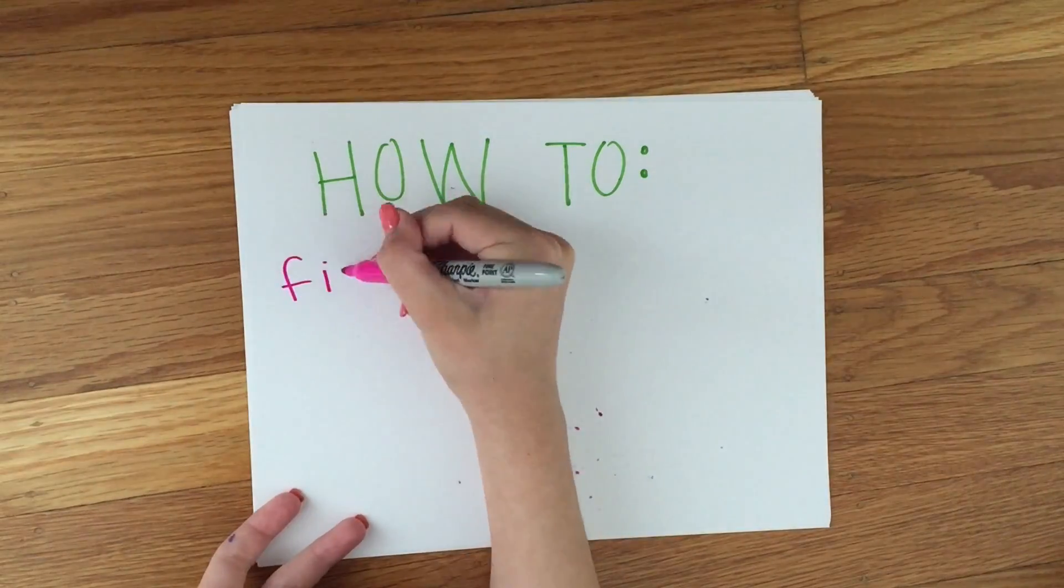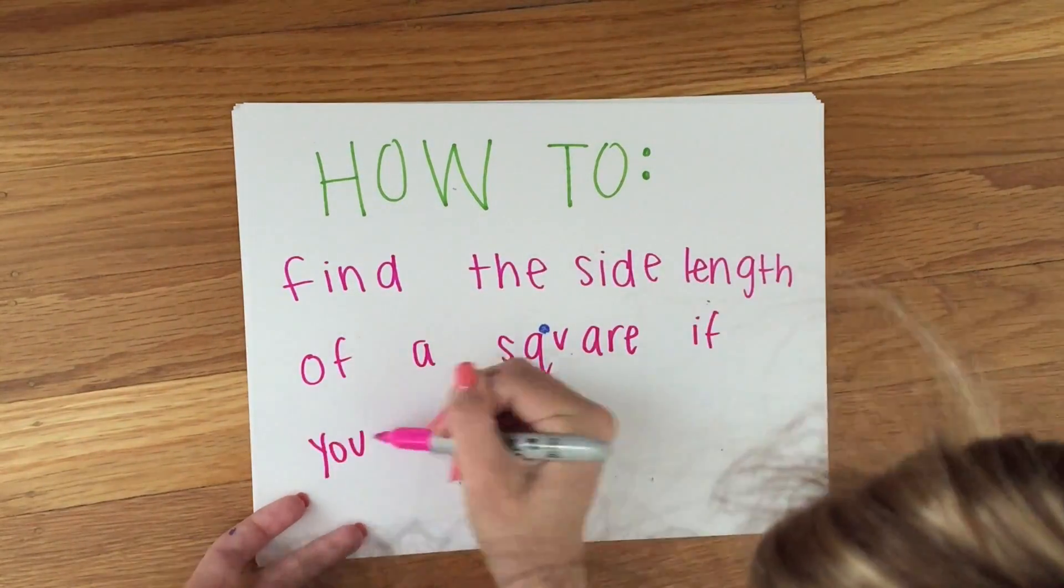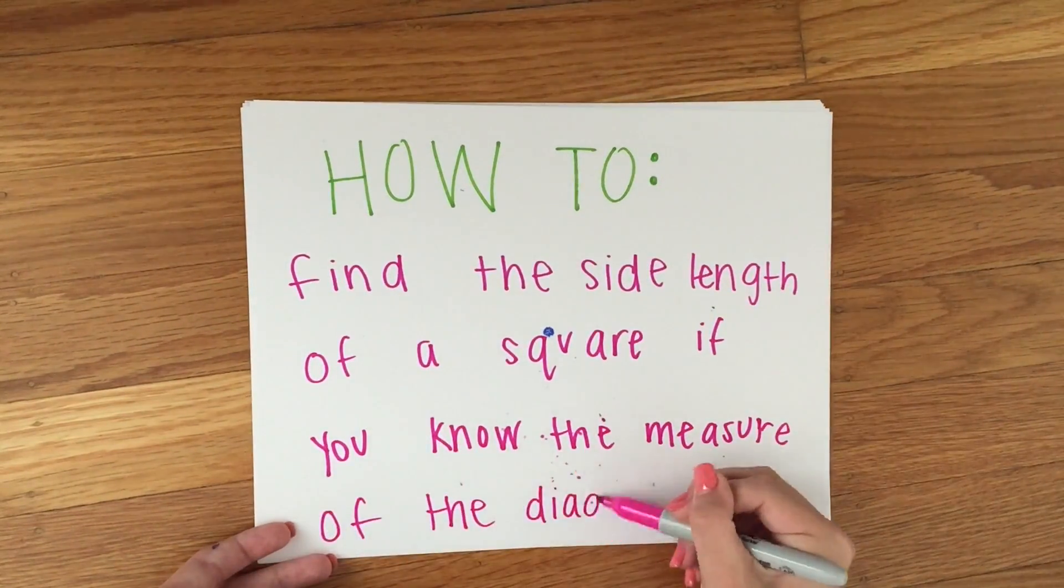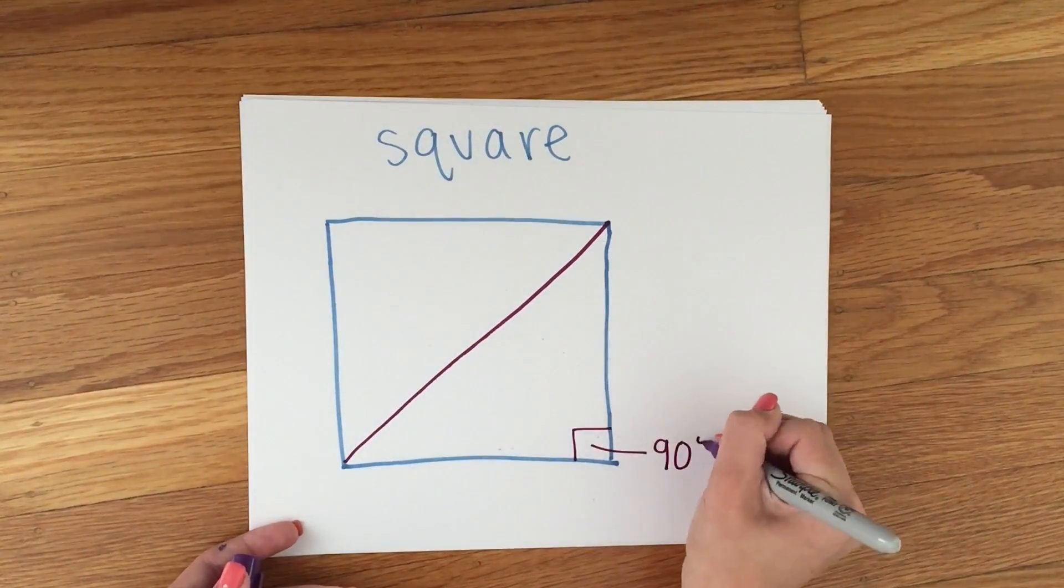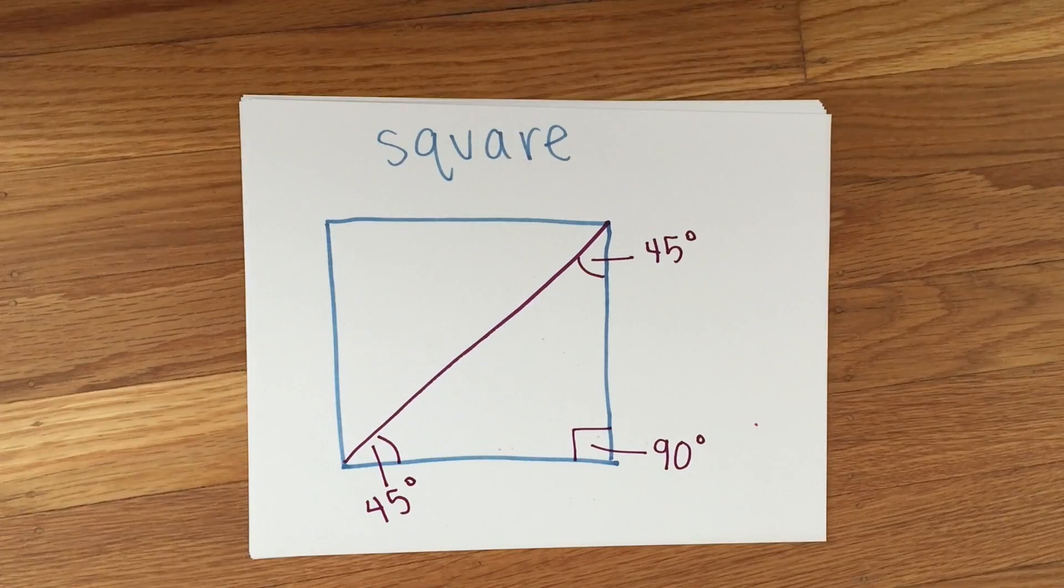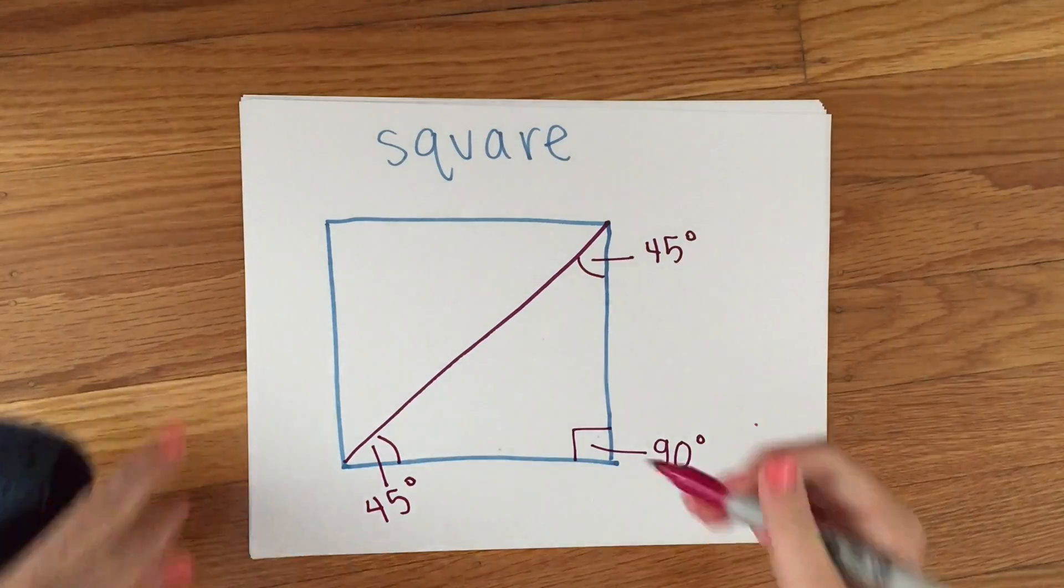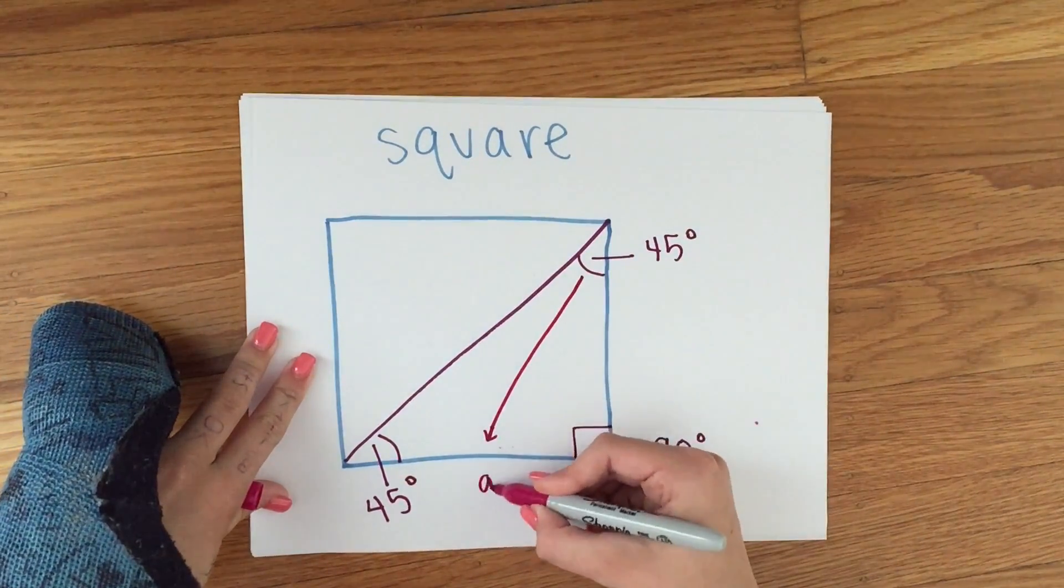Next we're going to talk about how to find the side length of a square if you know the diagonal. The square's diagonal forms two triangles that both have one 90-degree angle and two 45-degree angles. The diagonal creates a 45-45-90 triangle.